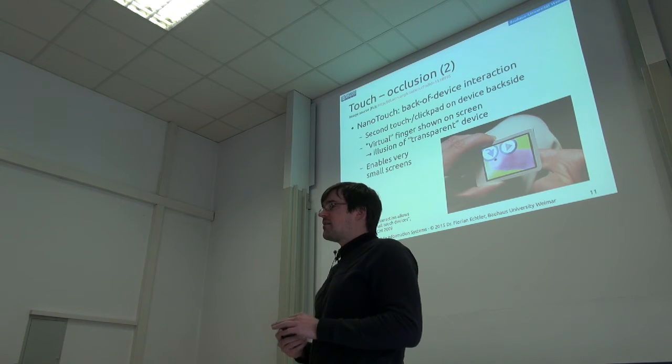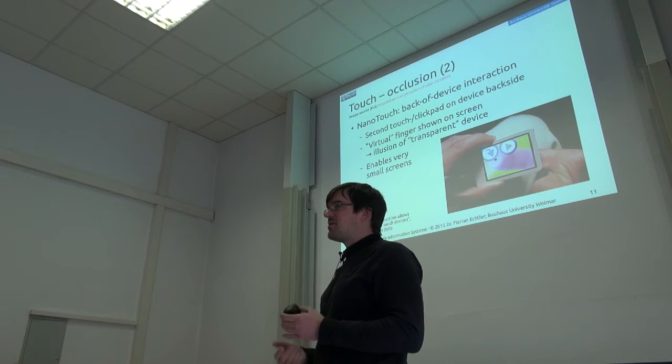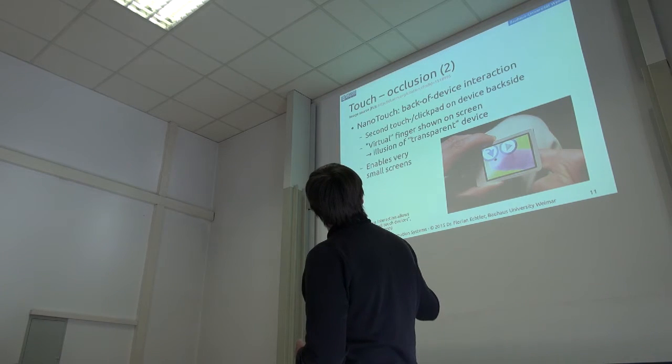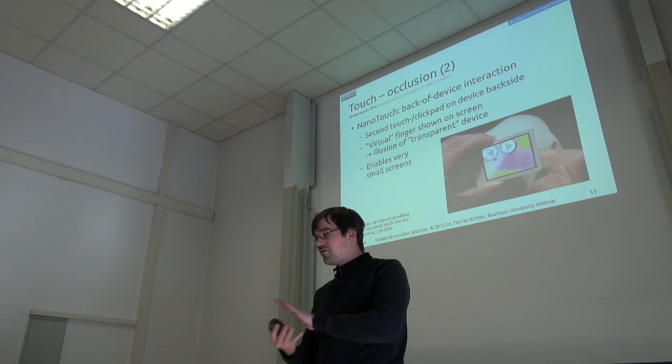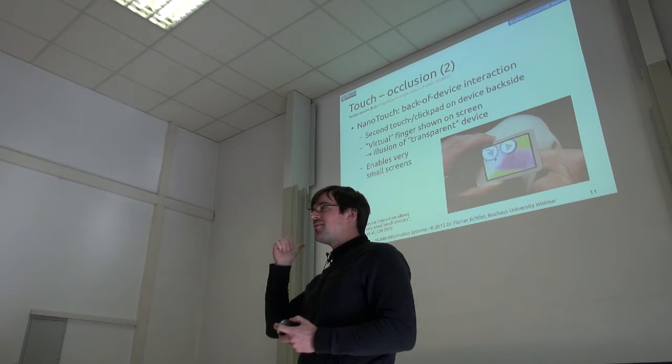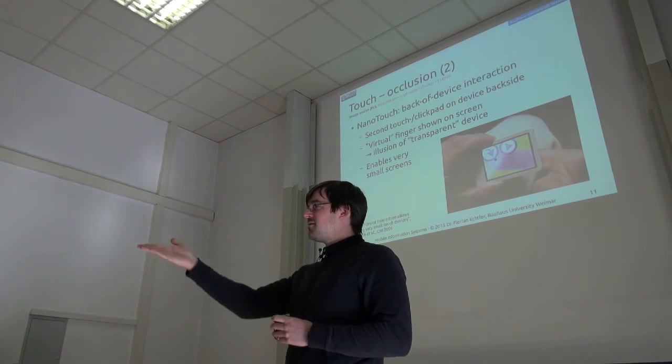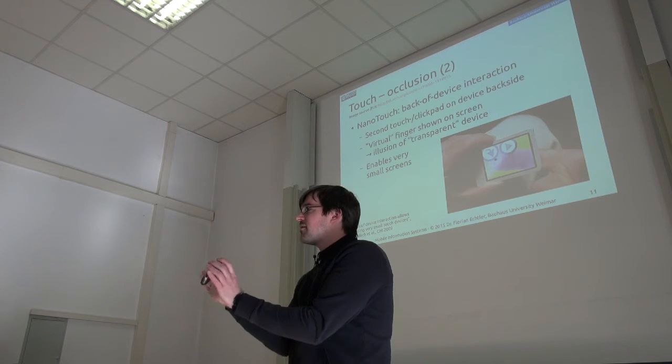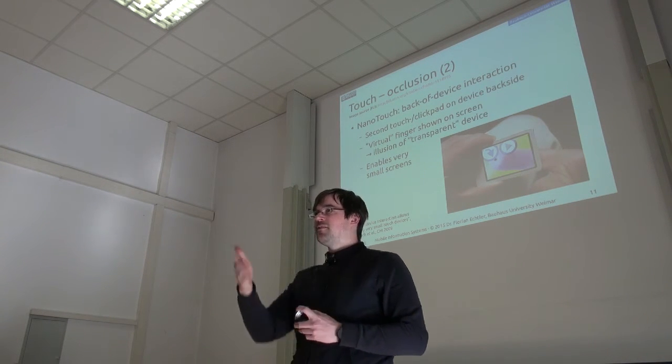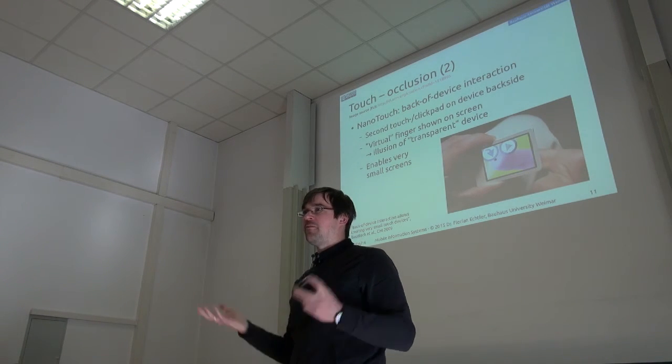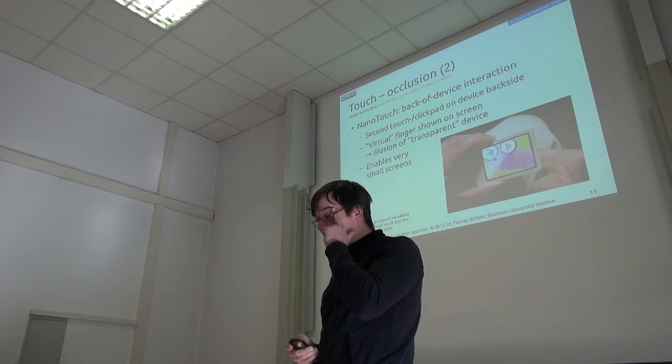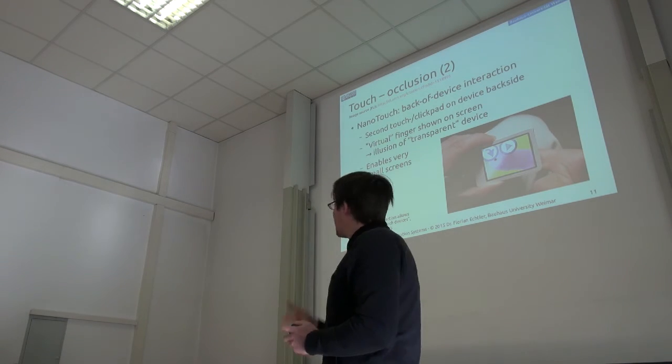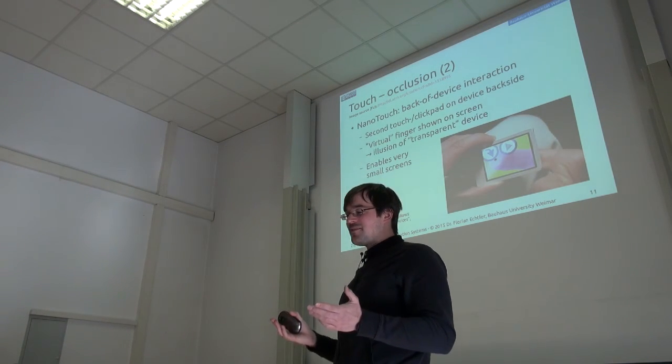Well, a completely different approach to dealing with occlusion is this nano-touch. This simply moves the touch surface to the back of the device and that basically gives you the illusion that the device is actually transparent and that you can touch things from behind. So, there's basically just a second touch surface on the backside. Does anyone have an idea how did they maybe create that illusion of having a transparent device? Camera at the back? No, it's actually far simpler. You don't even need a camera because if you had a camera, then it would have to be a fisheye camera. It's much simpler. It's just an image of a finger. That's all it is. And usually, that's enough for people to kind of get the feeling that it's actually their own finger because it moves along with their finger.